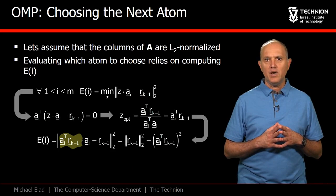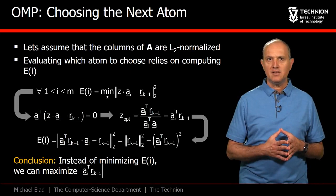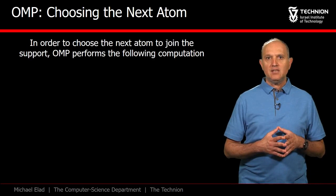we get that EI equals the square norm of the residual, minus the square of the inner product between A and the residual. Therefore, instead of minimizing the error EI, we might as well maximize the absolute value of this inner product.